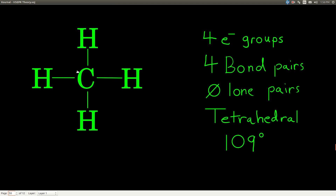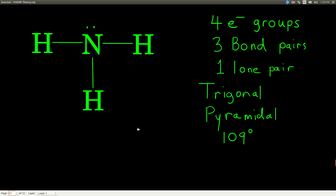This is methane, CH₄. There are four electron groups, zero lone pairs, and four bond pairs — that makes this a tetrahedral geometry with a bond angle of 109 degrees. Ammonia, NH₃, has four electron groups: one lone pair and three bond pairs. That means its shape is trigonal pyramidal, and the bond angle is 109 degrees.